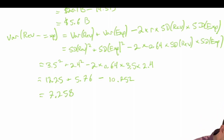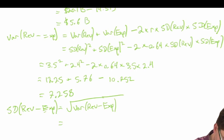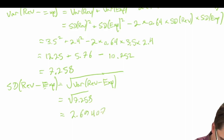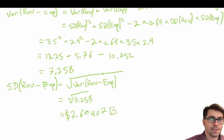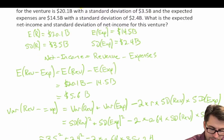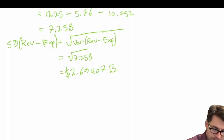That's our variance. The standard deviation of revenue minus expenses equals the square root of the variance of revenue minus expenses, which is the square root of 7.258, giving us approximately 2.694 billion dollars. So very quickly, we have calculated our expected value of net income and the standard deviation of net income, otherwise known as revenue minus expenses.